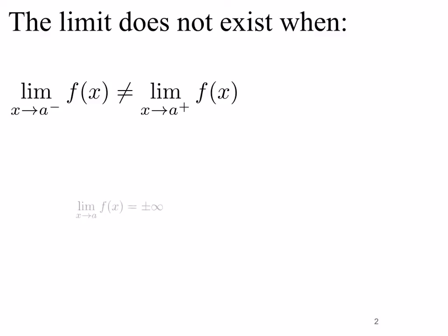In this section we're also going to add another set of limits to the 'does not exist' category. Those will be any limits where the limit as x goes to a of f(x) equals either plus or minus infinity. Now in many cases it is important to know whether that limit is plus infinity or minus infinity, but by definition limits that equal plus or minus infinity are said to be 'does not exist.'